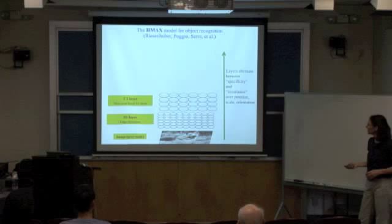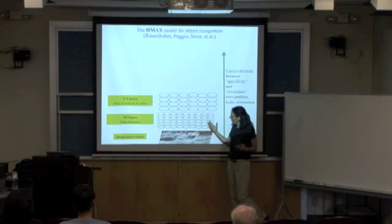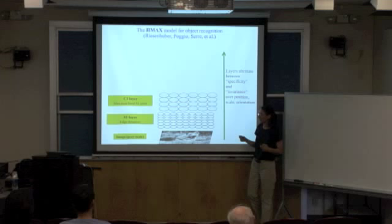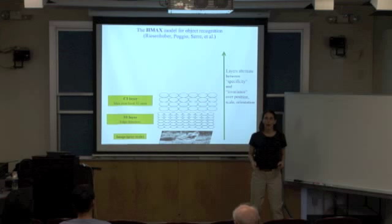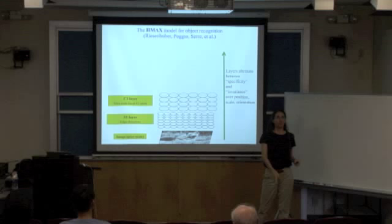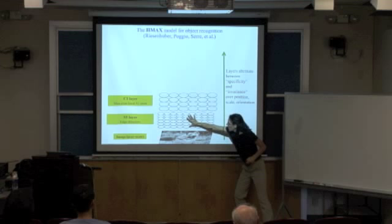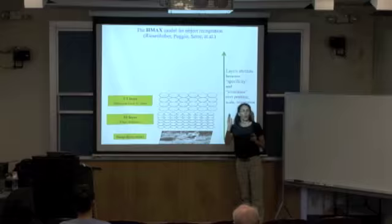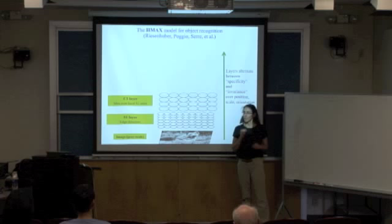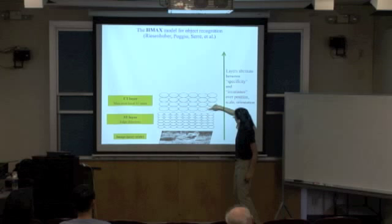This layer is called S1 because these units model what are called simple cells in the visual cortex, which are sensitive to particular inputs like a particular edge orientation. You have neurons that are very sensitive to specific edges — a neuron might fire every time it sees a vertical line in its part of the visual field, while other neurons respond to other orientations. These implement what's called specificity: each cell is very specific about what input will trigger it.